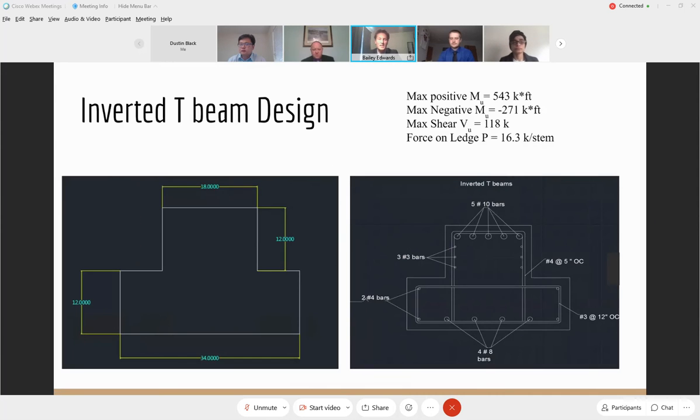The inverted T beam was designed in the same way as the L beam. However, we have much higher loadings on this considering it has a higher tributary area that is acting on it. You can see in the bottom left the geometry of the beam that we chose, which is 18 inches at the top with a 34 inch base with 12 inch ledge for a total of 24 inches tall. And then you can see on the right the reinforcement again. We have five number 10 bars to withstand the positive moment, four number eight bars to withstand the negative moment, and then number four stirrups at five inches on center to withstand the shear. You can also notice that the reinforcement inside that ledge is very similar to the L beam. This is because the force on the ledge is the same as it was acting on the L beam. Also, it is governed by some PCI minimum standards that are in place. So that is why those bars are pretty much exactly the same as they were on the L beam.